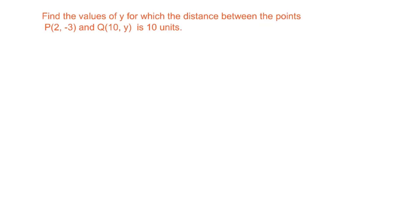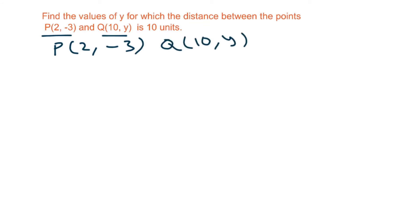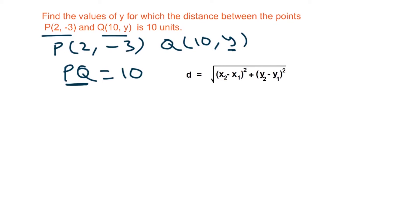Find the values of y for which the distance between points P(2, minus 3) and Q(10, y) is 10 units. It is given that P is (2, minus 3) and Q is (10, y), and the distance PQ is 10 units. We use the distance formula: d = square root of (x2 minus x1) whole square plus (y2 minus y1) whole square, with P as (x1, y1) and Q as (x2, y2).